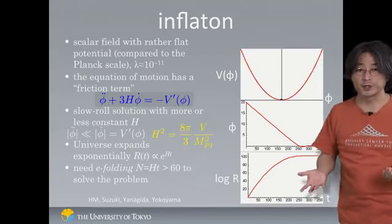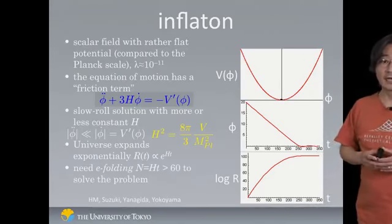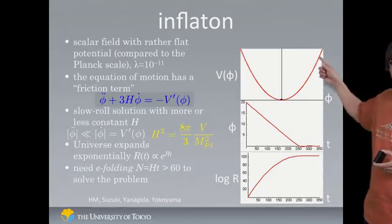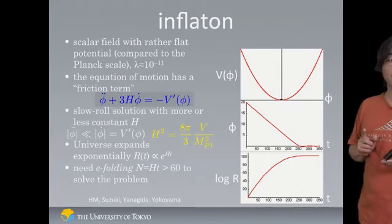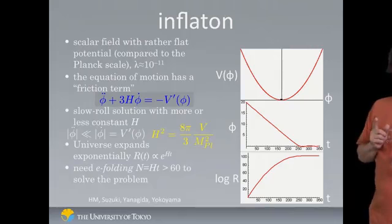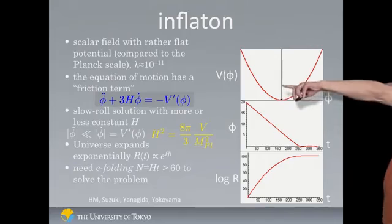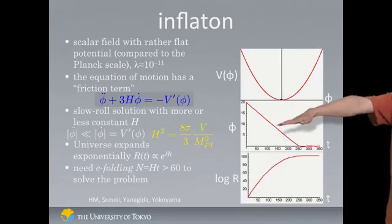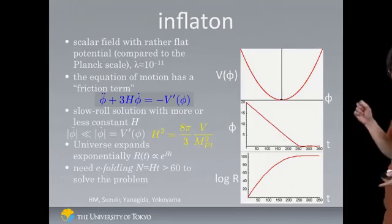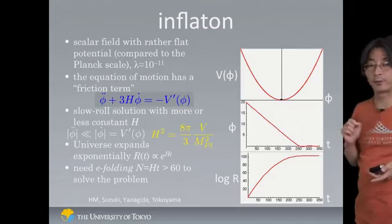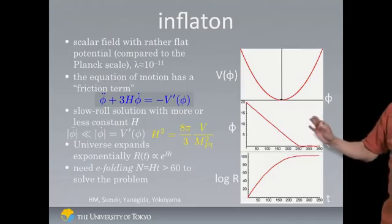So to a good approximation, the energy density is actually constant when the ball is slowly rolling down the hill. And indeed that's exactly what happens. So if you assume this potential is shallow enough, so it's nearly flat, the slope is more or less flat, then the ball wouldn't be pulled down very quickly, so it rolls down the hill very slowly.